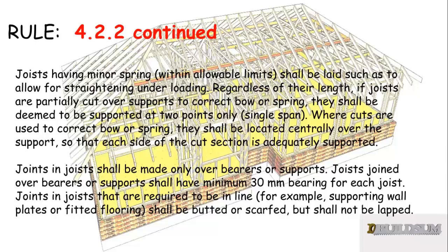Joints in joists shall be made only over bearers or supports. Joists joined over a bearer or support shall have a minimum of 30mm bearing for each joist. Joints in joists that are required to be in line — for example, supporting wall plates or fitting floors — shall be butted or scarved, but shall not be lapped.